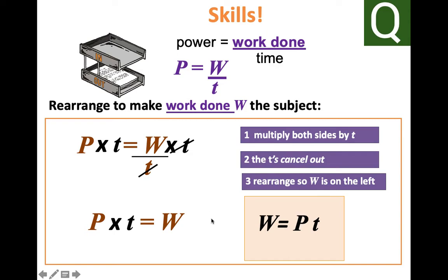Work done is power times time. It's really important that you write out the equation you're going to use so you show the examiner what you intend to do. So, work done equals power times time.